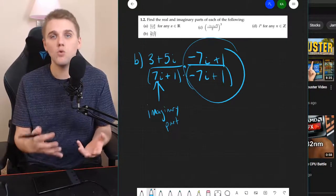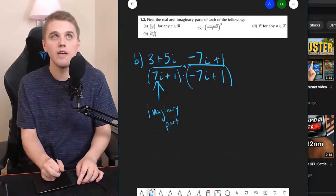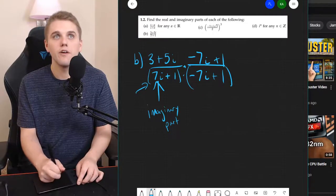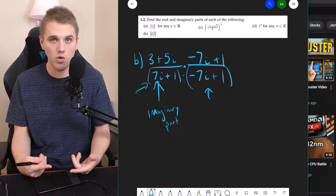And the thing about multiplying by 1 is it doesn't change the value of the number. And so I get to multiply this denominator with its complex conjugate without changing the value of the number.